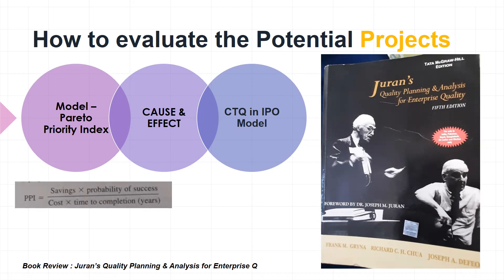The second methodology is the cause and effect fishbone diagram, exploring impact and results. The third is the CTQ in the input-process-output model. The PPI method comes from the book 'Juran Quality Planning and Analysis for Enterprise Quality,' fifth edition.